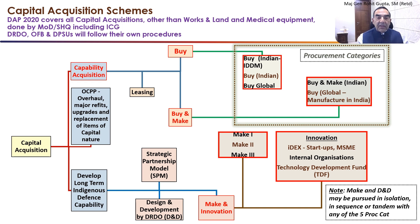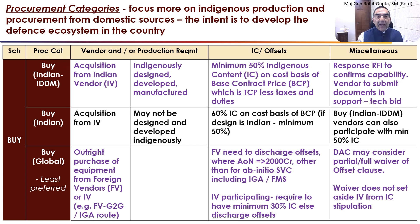In this session, I will cover the capability acquisition, primarily comprised of the BUY and BUY & MAKE schemes with the procurement categories, and the MAKE and Innovation scheme with the three MAKEs and Innovations. Procurement Categories — the focus of the policy is on indigenous production and procurement from domestic sources, in consonance with the intent of the government of Atma Nirbharta. The intent is to develop the defense ecological system in the country.